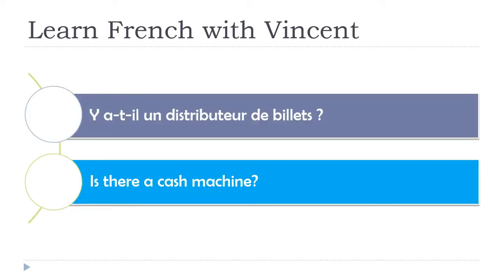'Is there a cash machine — ATM if you prefer?' In French: 'y a-t-il un distributeur de billets?' Here I've changed the order of 'il y a'. Note that 'y' is a pronoun, so it should always come before the verb.